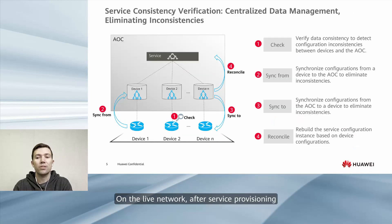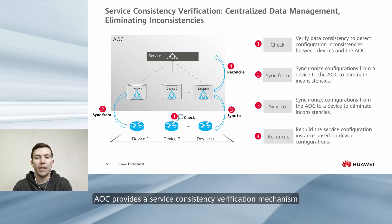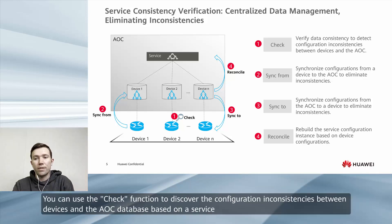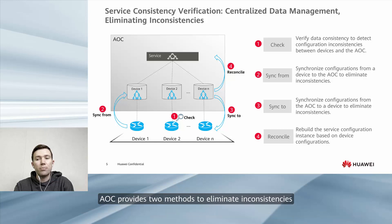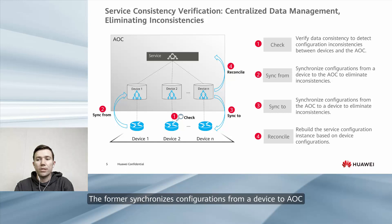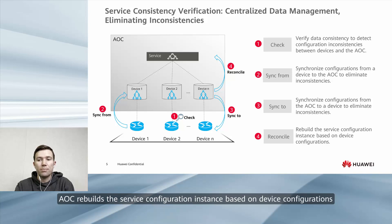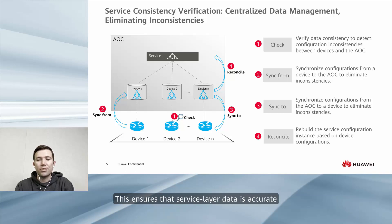On the live network, after service provisioning, device configurations may be modified by other authorized users. For this decentralized management mode, it's difficult to manually detect and eliminate the impact of such modifications on existing services. AOC provides a service consistency verification mechanism. You can use the check function to discover configuration inconsistencies between devices and the AOC database based on a service. AOC provides two methods to eliminate inconsistencies: sync from and sync to. The former synchronizes configurations from a device to AOC; the latter synchronizes configurations from AOC to a device. After synchronization, AOC rebuilds a service configuration instance based on device configurations, ensuring the service layer data is accurate.